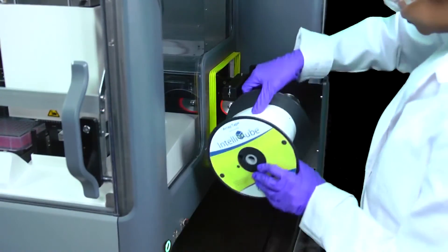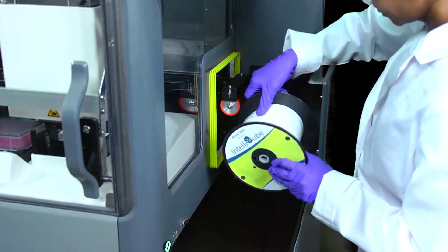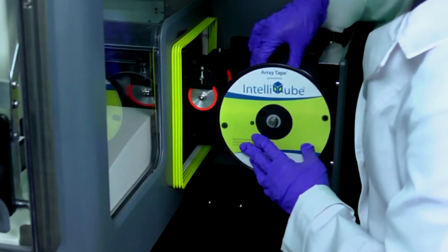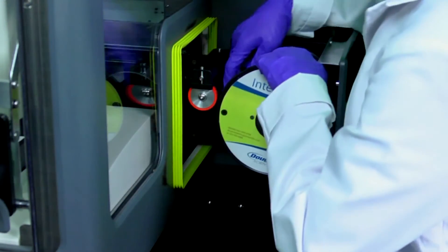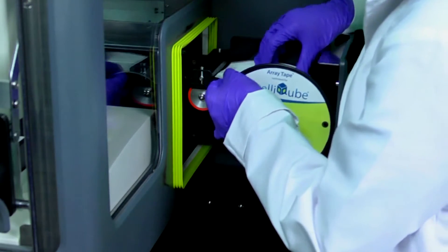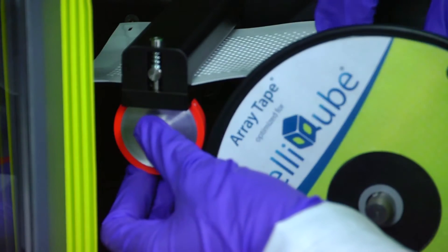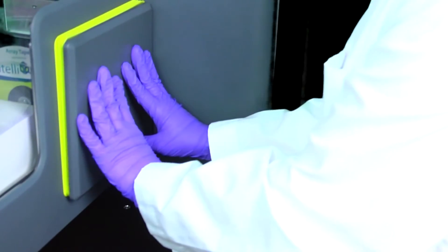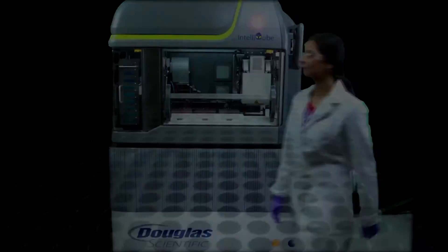The instrument is optimized for use with an opaque white polypropylene ArrayTape specifically designed for the IntelliCube. In addition to our standard 384 well ArrayTape pattern, our new 768 well interlaced pattern enables even higher throughput.